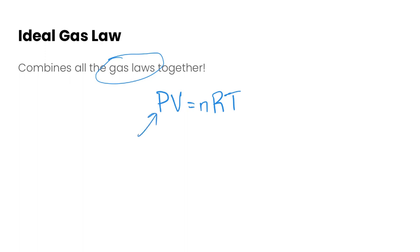So P is our pressure, that's in units of kilopascals. V is volume, that is in units of liters or also decimeters cubed. N is number of moles, so that's in moles. And temperature is in Kelvin.